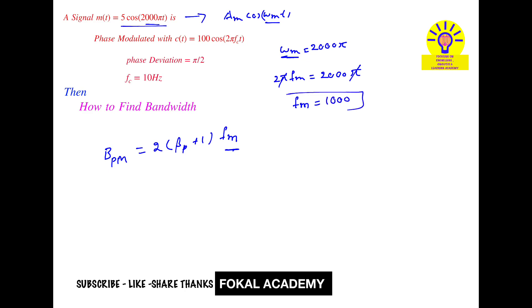And beta_p is nothing but phase deviation, that is given as pi by 2. Now substitute this value and this value in this equation. Then we get 2 times (pi by 2 plus 1) times fm = 1000. So by simplifying this, we will get 5141.6 hertz.